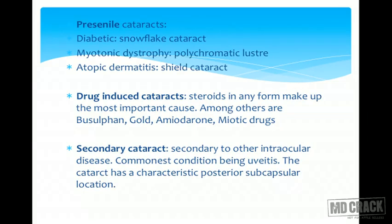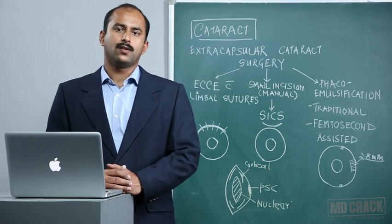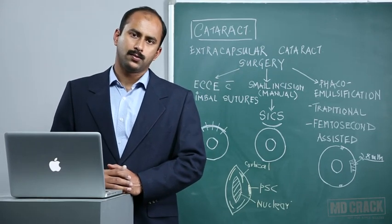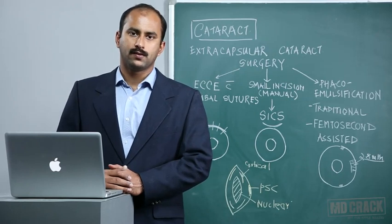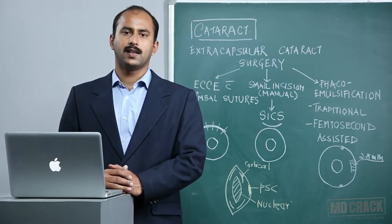There are certain types of cataracts. The most common ones we see in practice are the senile cataracts. These develop after a certain age and are a by-product of protein denaturation over a period of time. If these cataracts come on before the age of 40 years, they are called pre-senile cataracts.